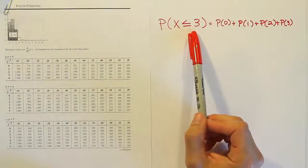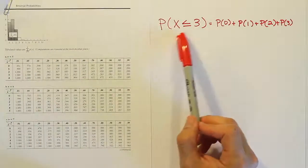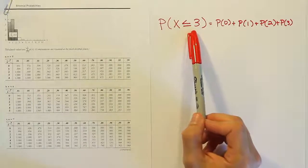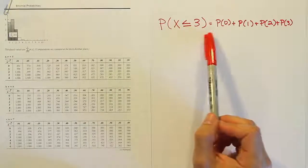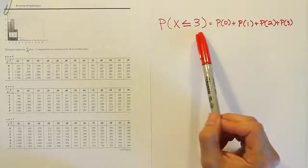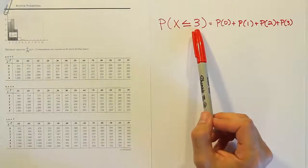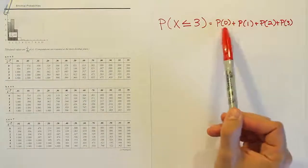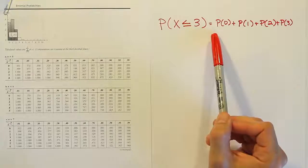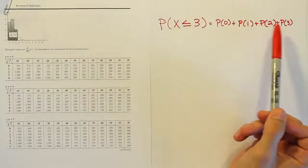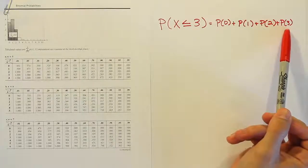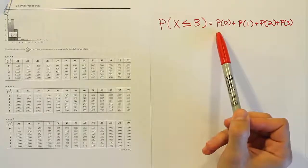So it always goes from the number you give it down to 0. It will not go up. In other words, you can't give it 3 and expect it to do 3, 4, 5, 6, 7, 8, 9, 10, etc. If you give it 3, the table assumes you want 3, 2, 1, 0 added together. So it's a cumulative probability where we sum from the number that's given to the table all the way down to 0. And that's how it works.